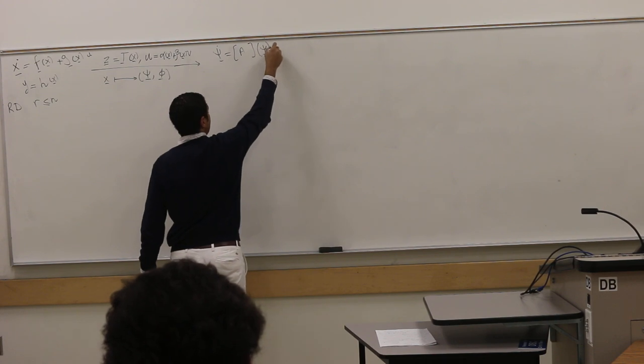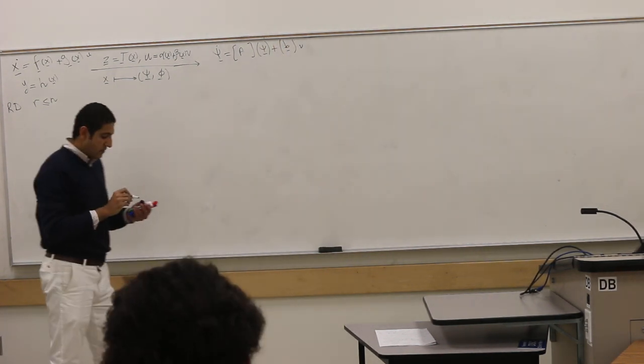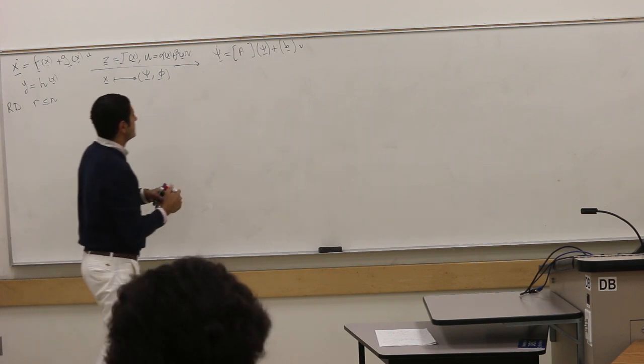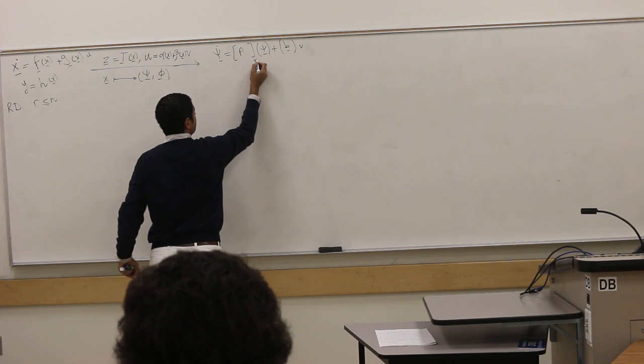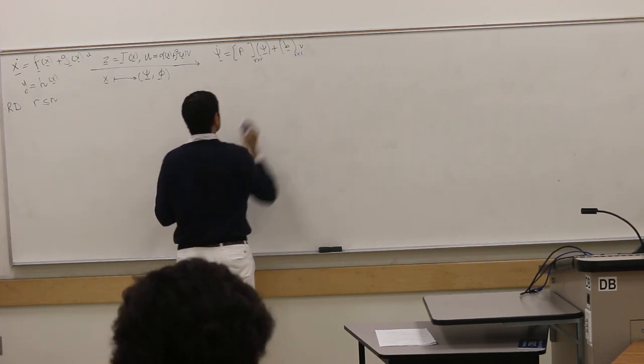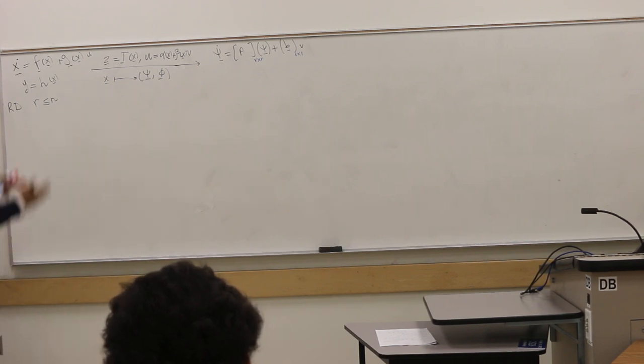A ψ plus V. If the relative degree is R, so this is R by R, this is R by 1. The output is related to ψ, so this is a linear map between the input and output, not between the input and the entire states.